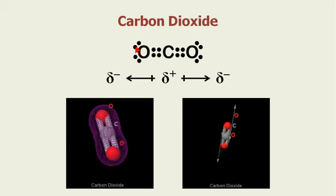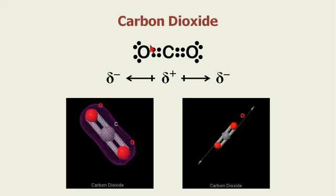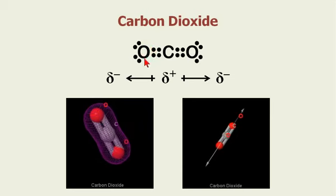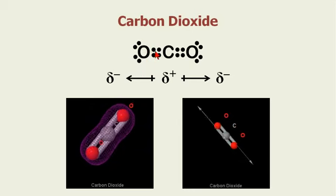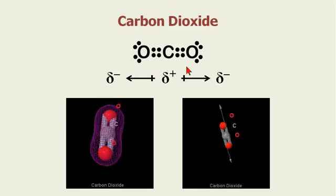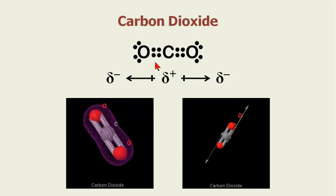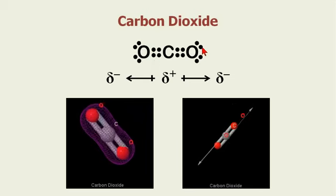These electrons are not attracted to each other, so they push each other away. Opposites attract and then similar negatives repel each other. So they're repulsed and you get something that looks like this for the dot diagram.